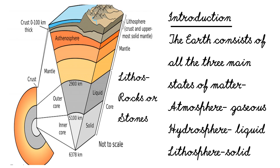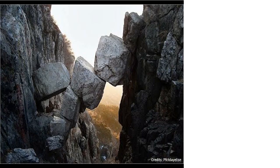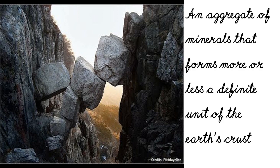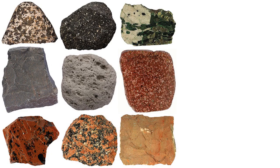Lithosphere forms the outer crust of the Earth on which continents and ocean basins rest. Rocks and minerals make up the crust of the Earth. The hard materials of the crust are called rocks. Rocks can be defined as an aggregate of minerals that forms more or less a definite unit of the Earth's crust. In scientific terms, rocks include not only hard materials but also soft and loose materials.